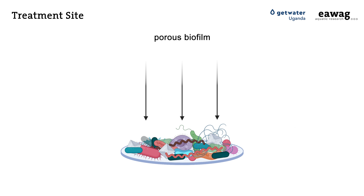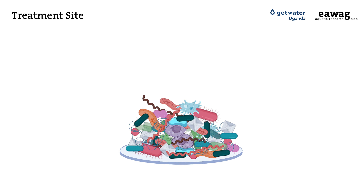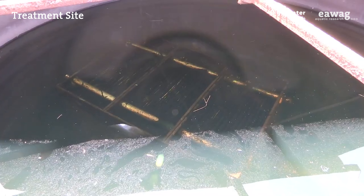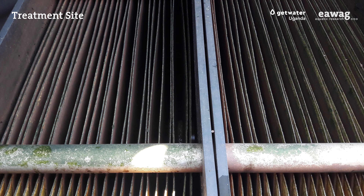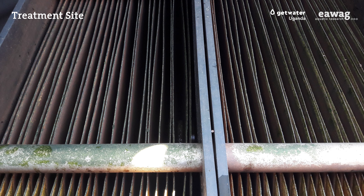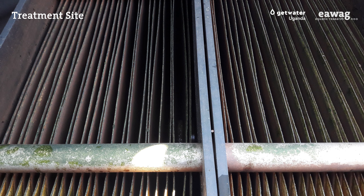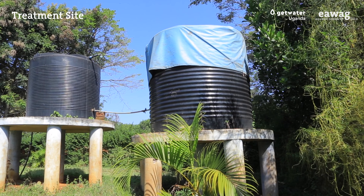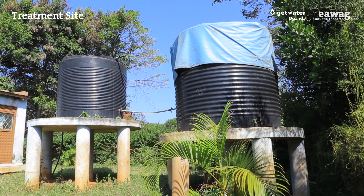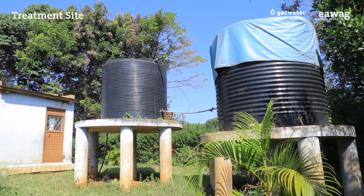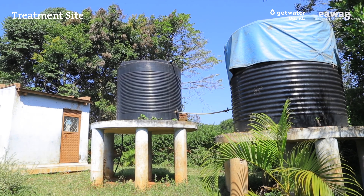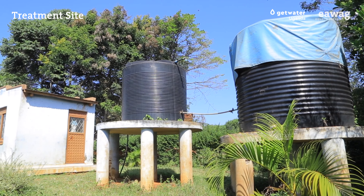A porous biofilm on the membrane enhances the process and avoids clogging of the membrane. After filtration, the treated water flows through the second tank where it is stored.